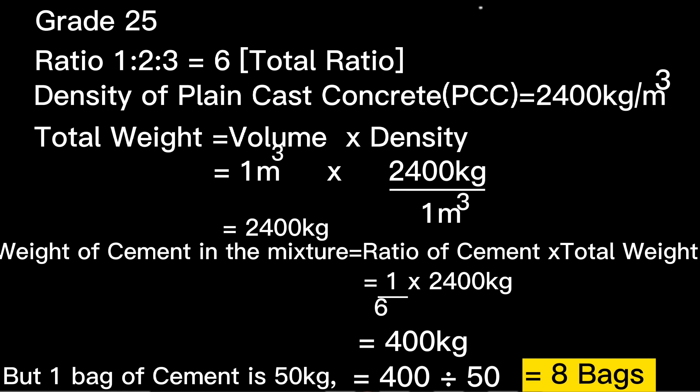The weight of cement in the mixture will be the ratio of cement multiplied by the total weight. Therefore, this will be 1/6 × 2,400 kg, giving a total cement weight of 400 kilograms. Since our bags of cement are 50 kilograms each, we get 400 ÷ 50 = 8 bags of cement. Therefore, we need 8 bags of cement for 1 cubic meter of grade 25 concrete.